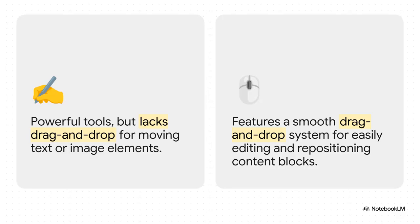Let's start with the basics: editing. Both platforms let you edit text and images, but their workflow is fundamentally different. While Adobe has a really powerful set of tools, moving a block of text or an image isn't a simple drag and drop deal — you often have to cut and paste. Foxit, however, built its editor around an intuitive drag and drop system. You can just select a paragraph, a headline, or a picture and slide it into place. For anyone making frequent layout changes, that's a huge time saver.